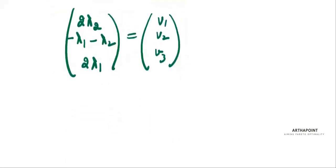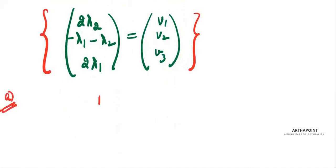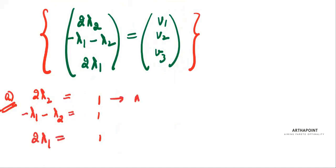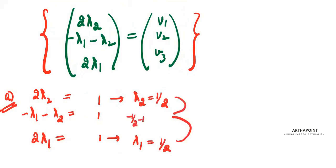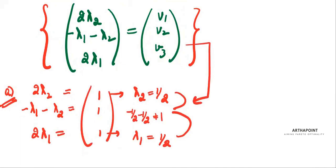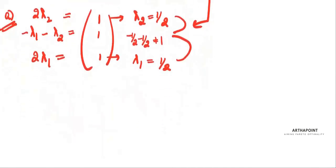You're given four vectors. Whichever vector satisfies all three equations simultaneously is the answer. The first vector given is (1, 1, 1). So: 2λ₂ = 1 gives λ₂ = ½; 2λ₁ = 1 gives λ₁ = ½. But putting these into the second equation gives -½ - ½ = -1, which is not equal to 1. So (1,1,1) does not lie in W — I'm not getting a consistent answer.